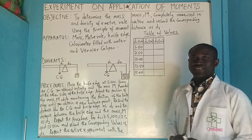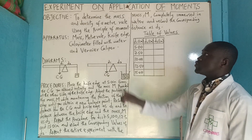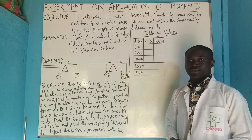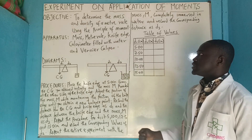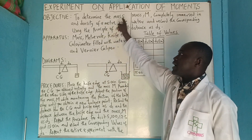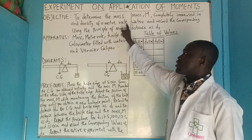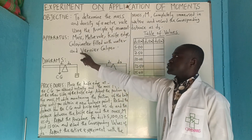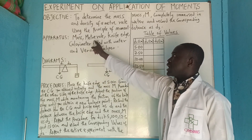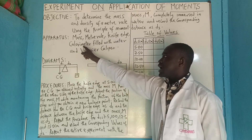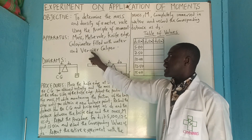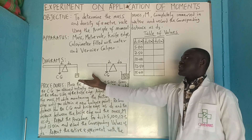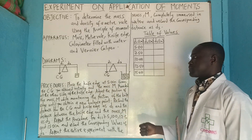Welcome again to today's class. In today's class we want to discuss an experiment on application of moments. The objective is to determine the mass and density of a meter rule using the principle of moment. The apparatus needed includes a mass, meter rule, knife edge, caliper, metal filled with water, and a Vernier caliper. Look at the sketch of the diagram.